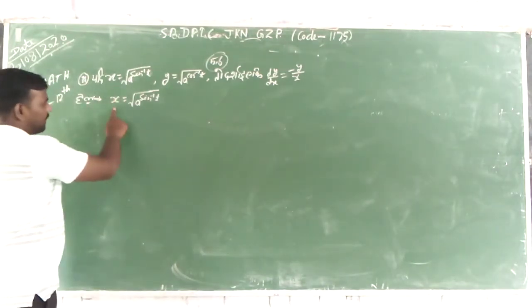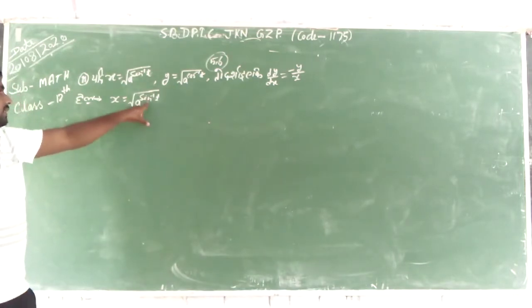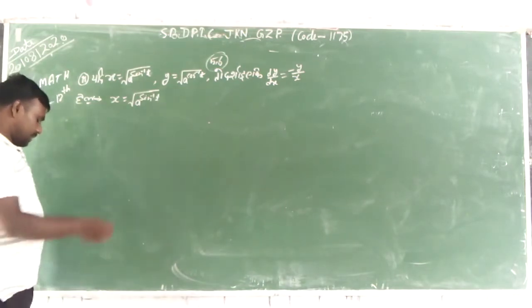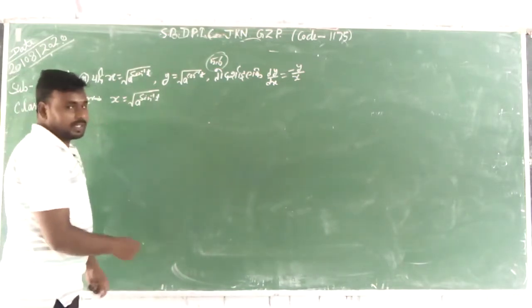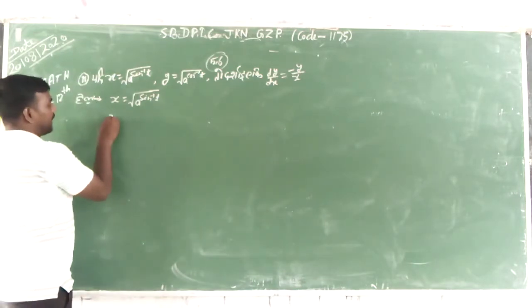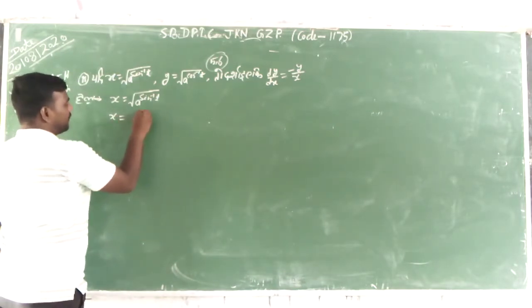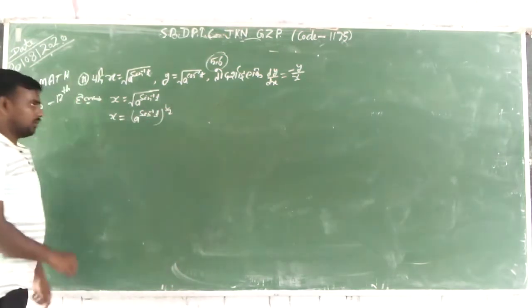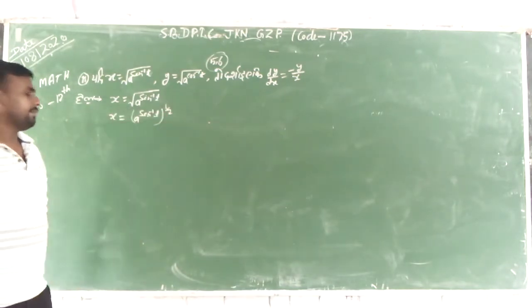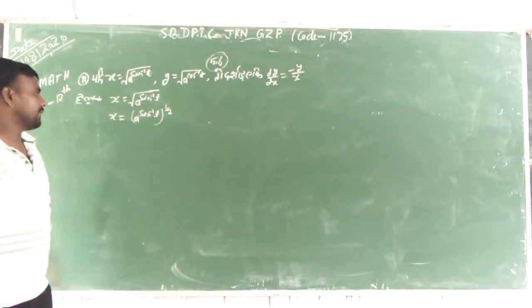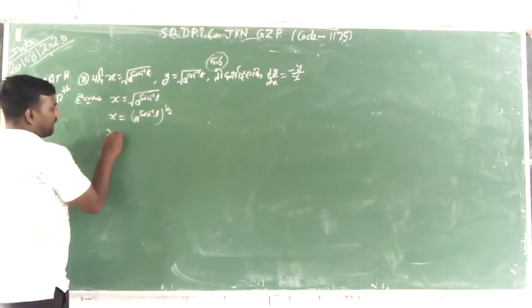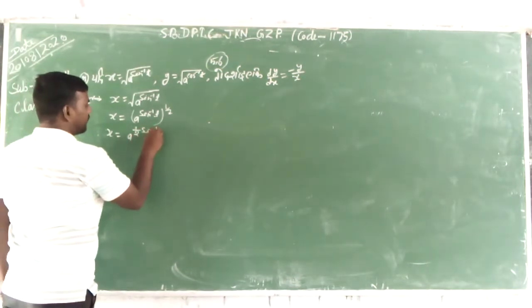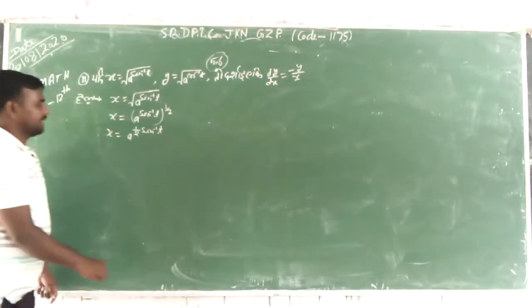So, dx/dt: x equals root k to the power sin inverse t. We have a to the power 1 by 2. Let's continue. We have to do this: 1 over 1 by 2, sign inverse t.